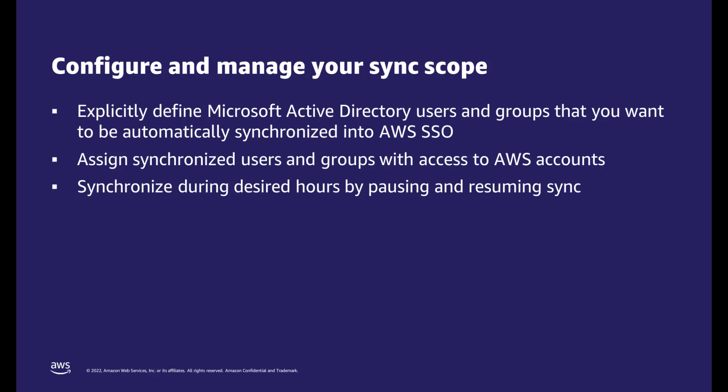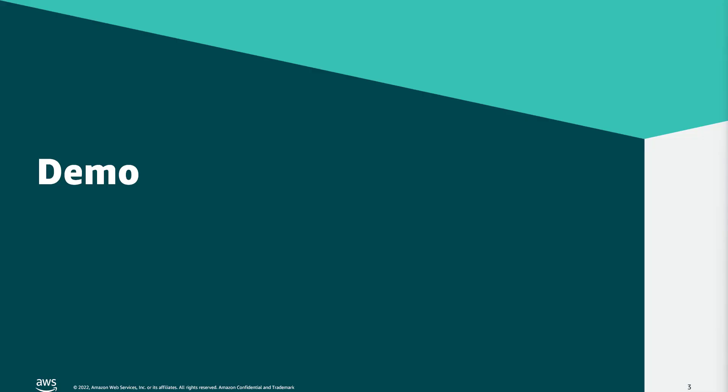With Configurable Synchronization for AD, you can synchronize users and groups consistent with your data sovereignty requirements. You can add or remove users and groups to change the scope of the sync at any time, assign synchronized users and groups with access to AWS accounts, and control the synchronization process by pausing and resuming the sync as needed. In this demo, I'll show you how to provision and manage AD identities in AWS SSO.